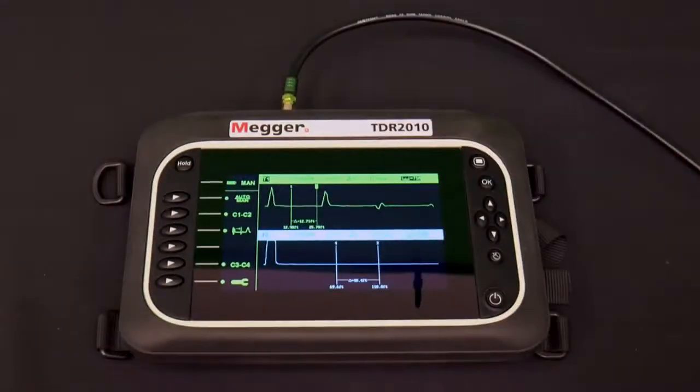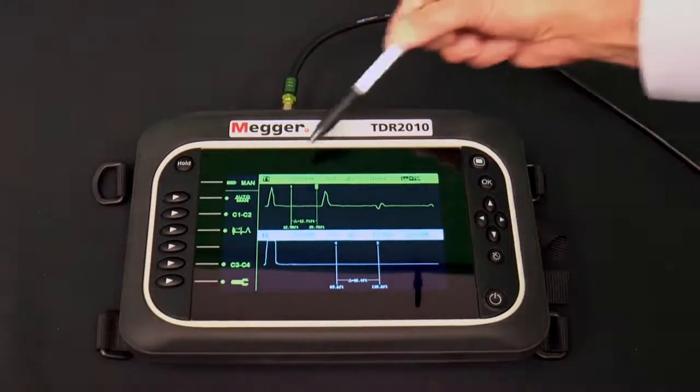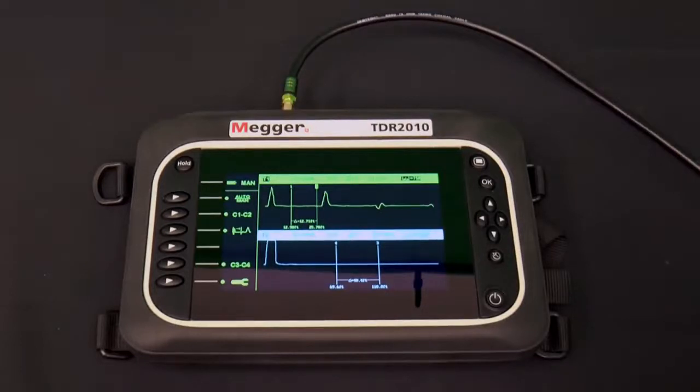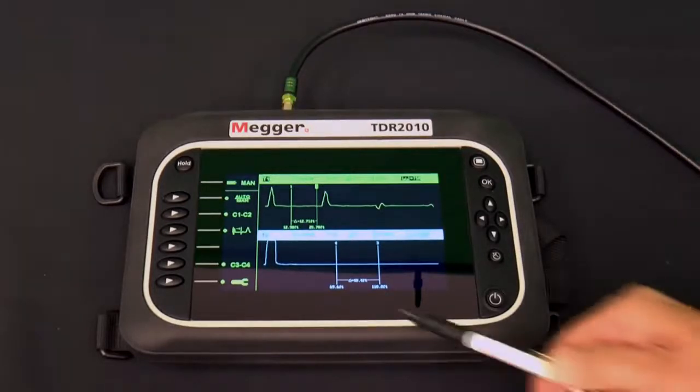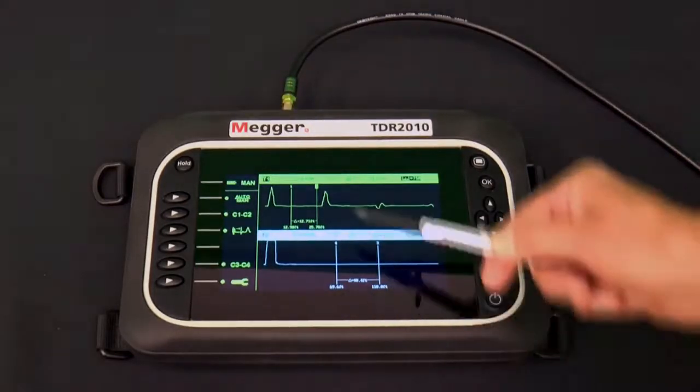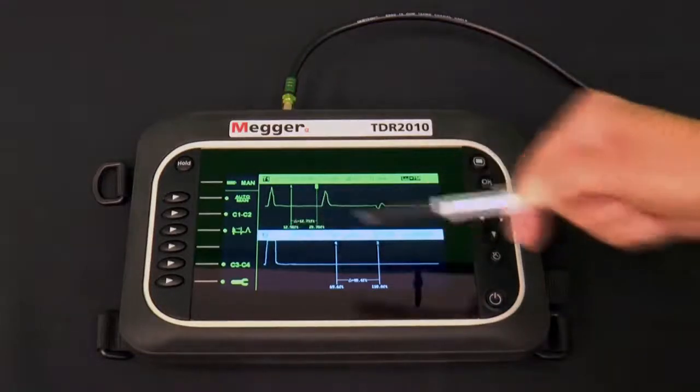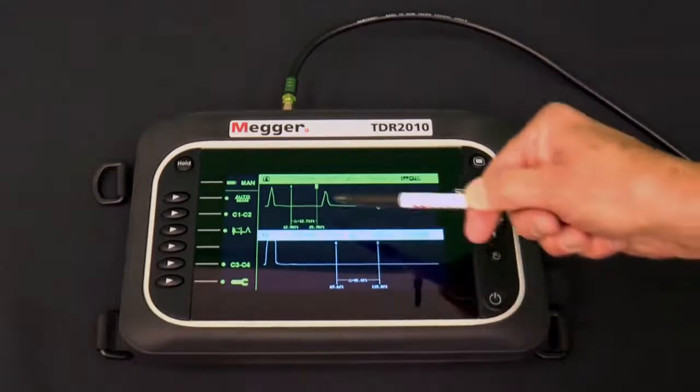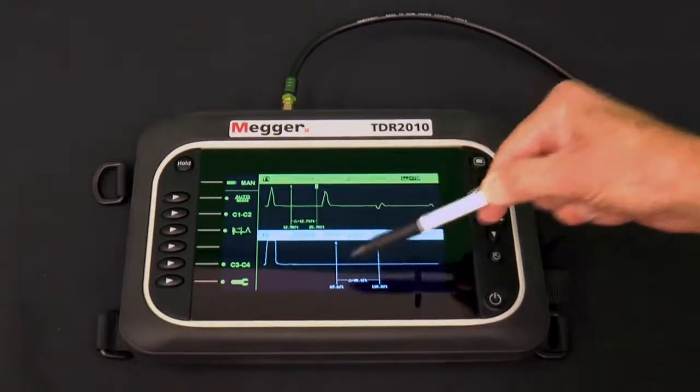It's time now to look at the cursors on the screen. Each trace has two cursors. The distance from the TDR2010 to each cursor is at the bottom of the screen under that cursor. The distance between the cursors is right next to the delta sign, the triangle.